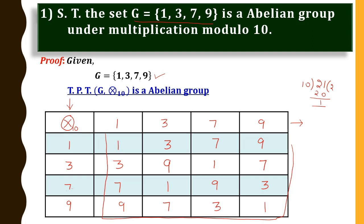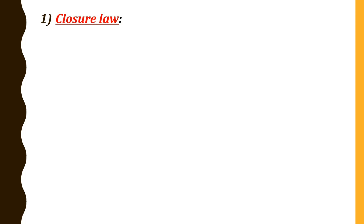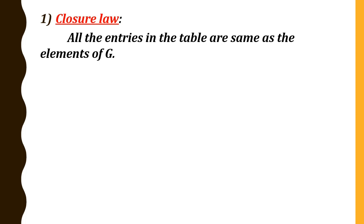Now observe carefully these boxes. The elements we got are 1, 3, 7, 9 — everywhere you see only elements of G, no other element appears. Now we shall consider the closure law. All the entries in the table are the same as the elements of G. The Cayley's composition table consists of elements of G only, no other elements. Therefore, closure law is satisfied.